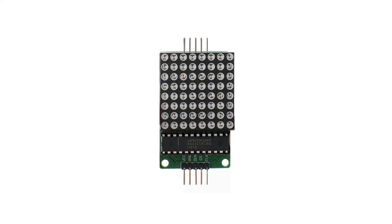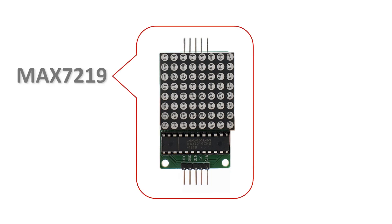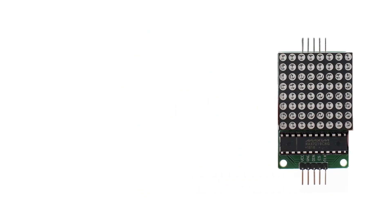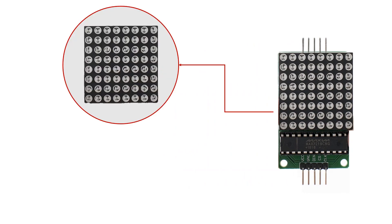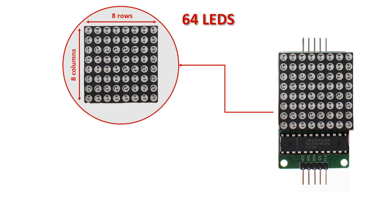We will use a MAX-7219 LED matrix module, which is made up of two main elements. A matrix with LEDs located in arrangements of 8 rows by 8 columns, with a total of 64 LEDs.